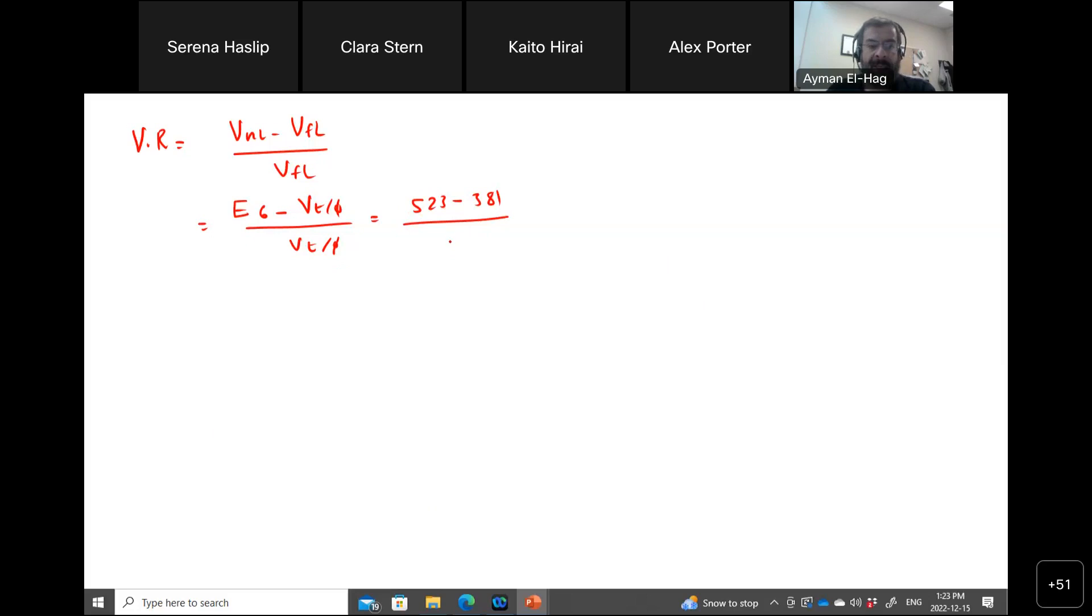This is equal to 523 minus 381. And now here we subtract magnitude only. Angle is not part of this, 381. And this is times 100 to make it percentage, and this is equal to 37.3%. So that is your voltage regulation.